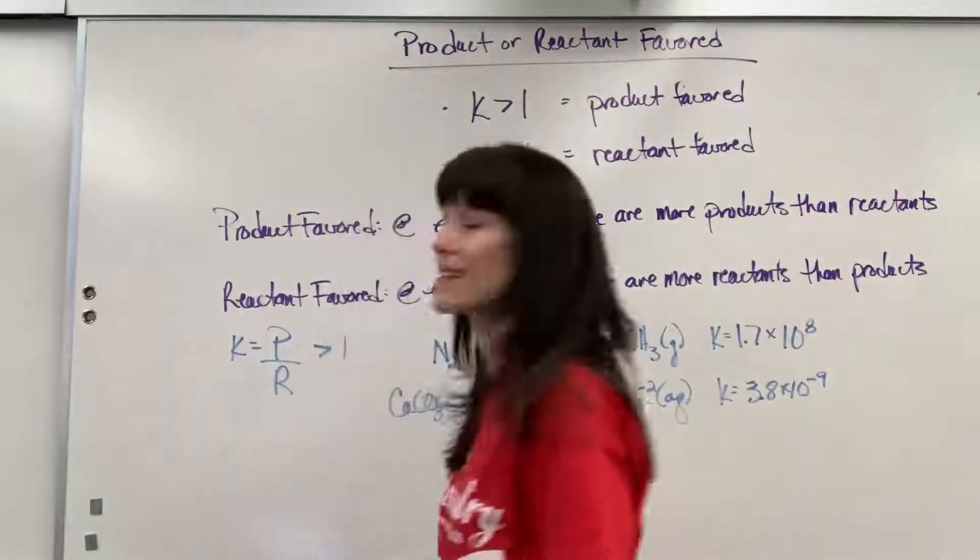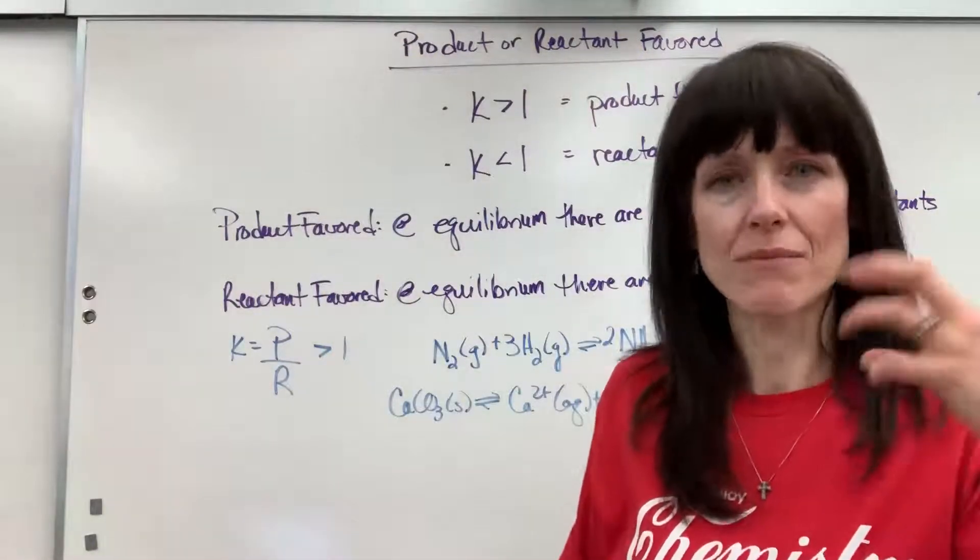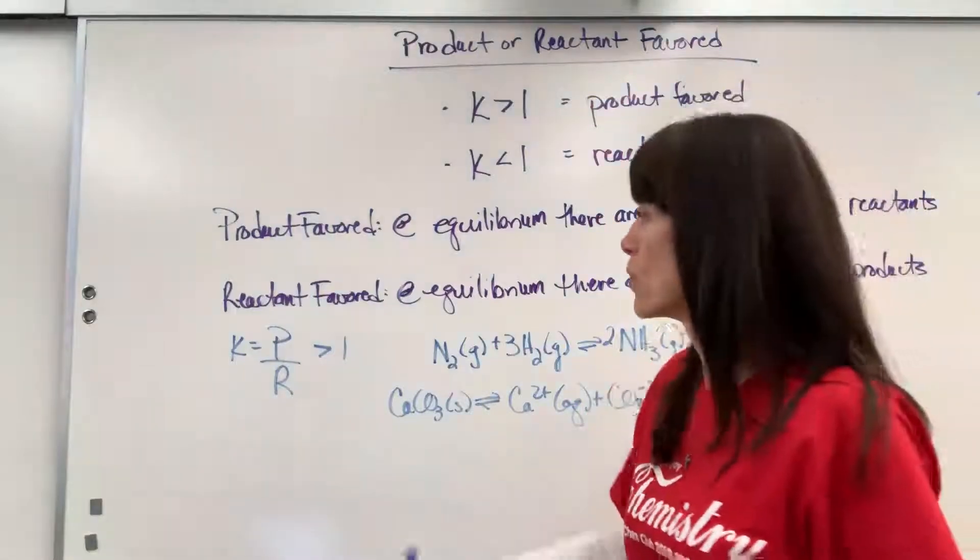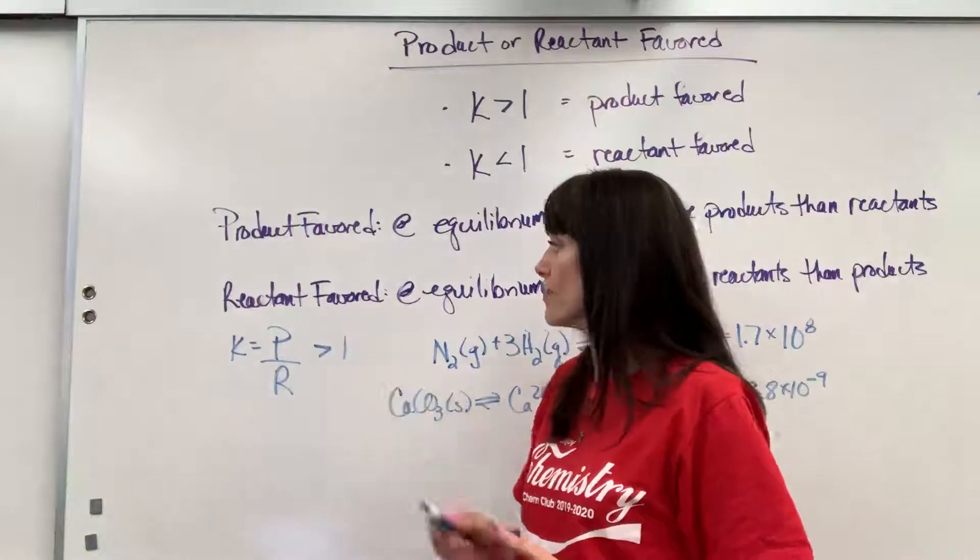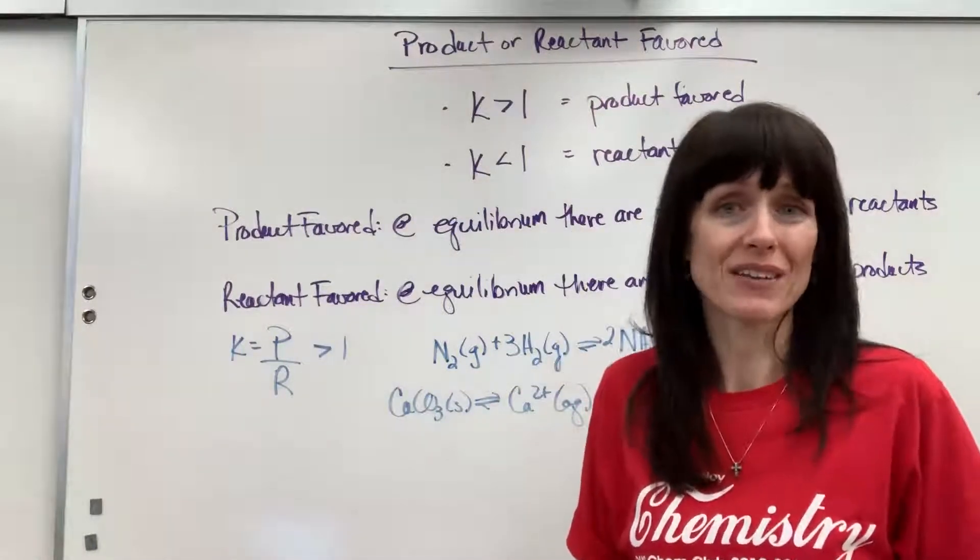K greater than one. So mathematically, there you have it, that you can make it make sense. Oh yeah, if I have more products, a bigger number in the numerator, it means I'm going to have a value greater than one always. So we say that's product favored.